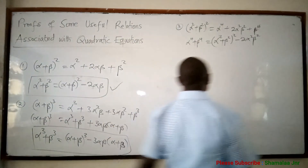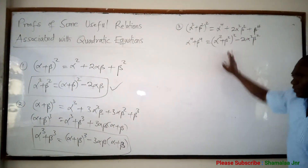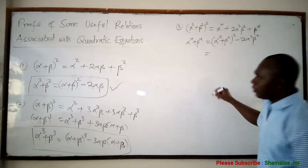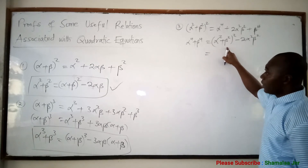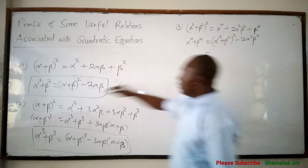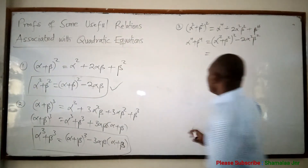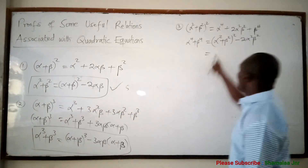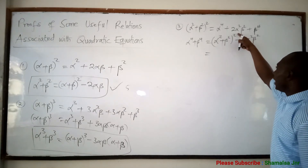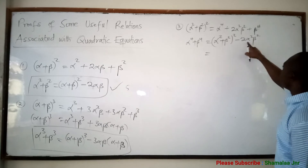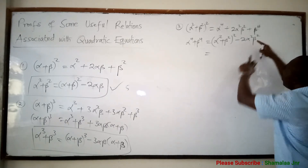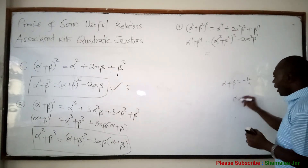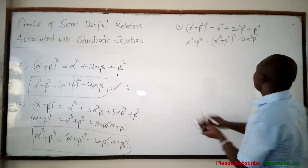Now, alpha squared plus beta squared from the first relation is known — it equals alpha plus beta all squared minus 2 alpha beta. So you can substitute that in. In place of alpha squared plus beta squared, you can write the whole of that expression. When the question is given to you, if you know the value for alpha squared plus beta squared, let's say it equals 5, when you come here you just write 5 and square it. And then alpha squared beta squared is the same as alpha beta all squared, so it becomes negative 2 times alpha beta all squared. Because alpha plus beta equals negative B over A and alpha beta equals C over A, these values are known.